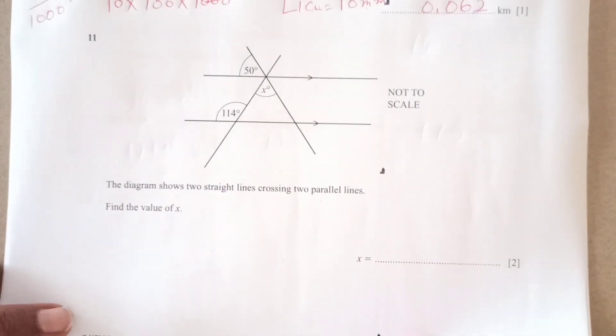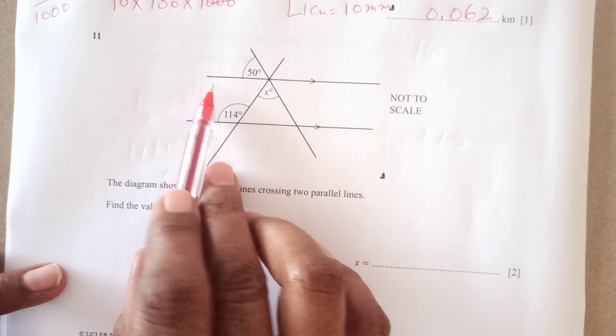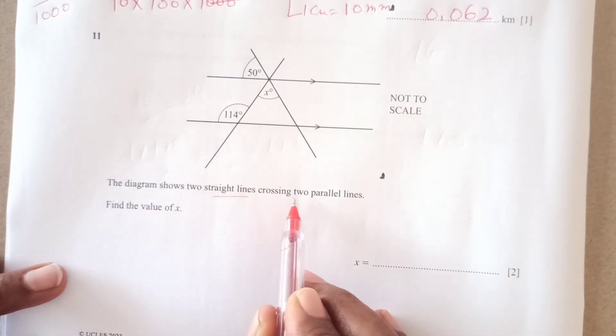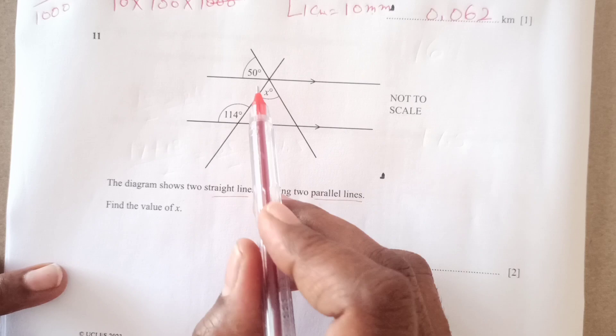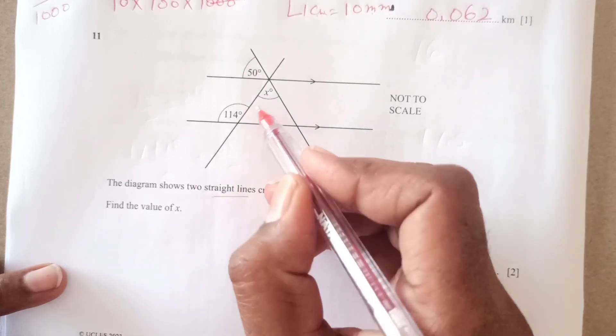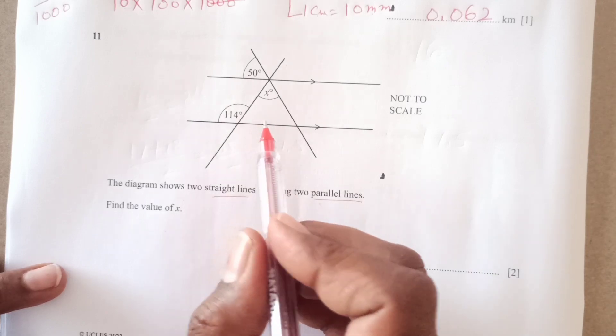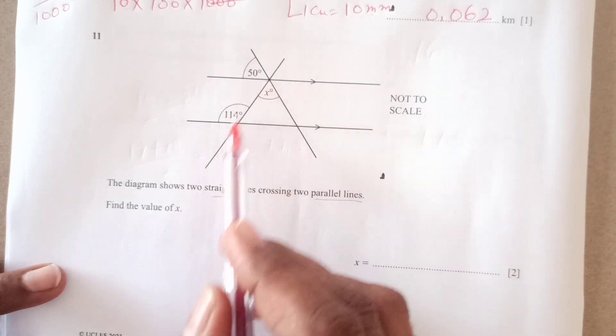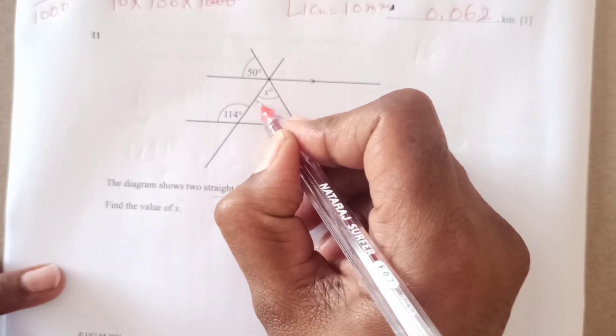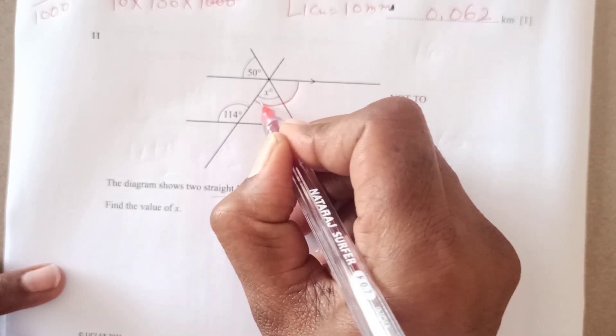Now number 11, we have here two parallel lines, this one and this here. The diagram shows two straight lines crossing two parallel lines. So these two lines are crossing these two parallel lines, find the value of x. Now as you see, we have these two lines parallel. So that means if this is 114, this is going to be equal to this angle, right?